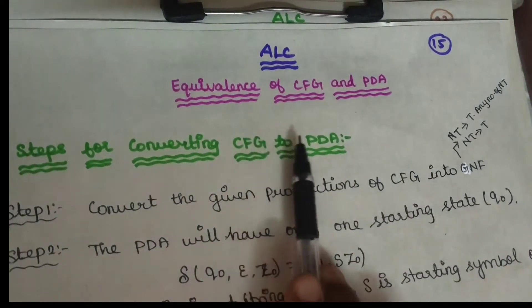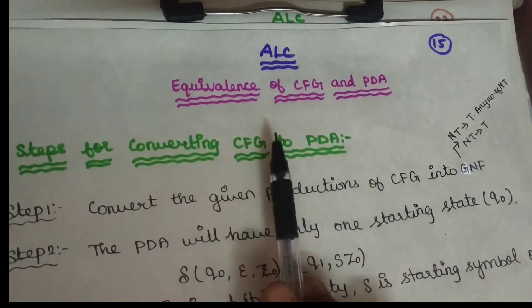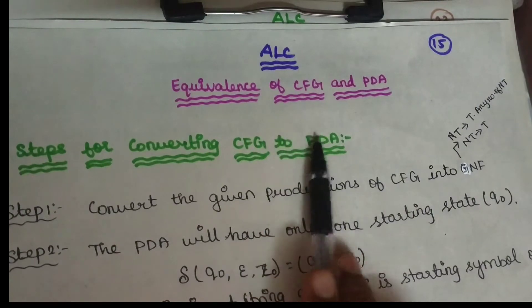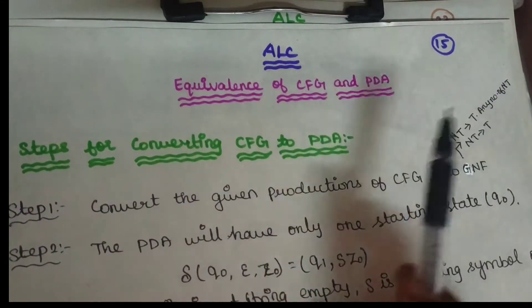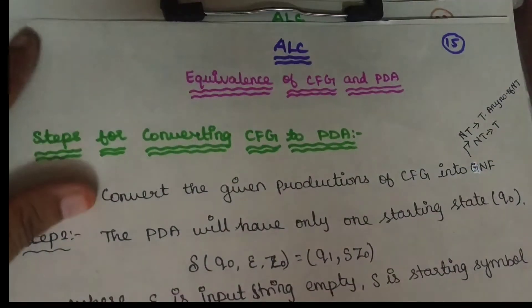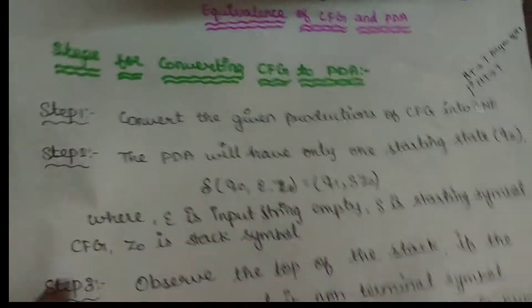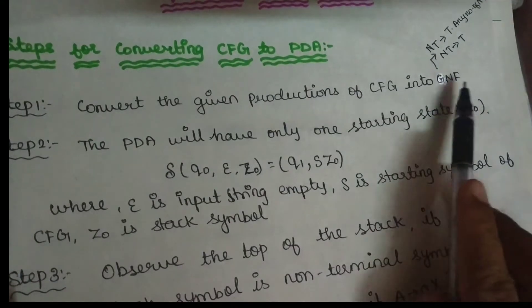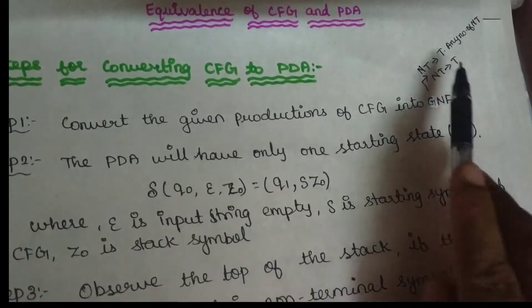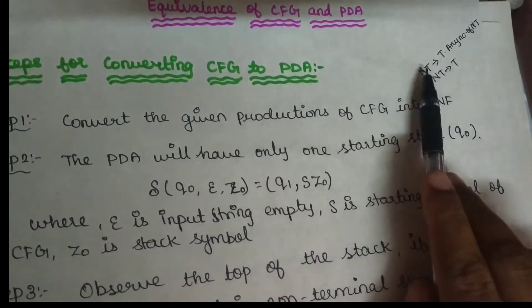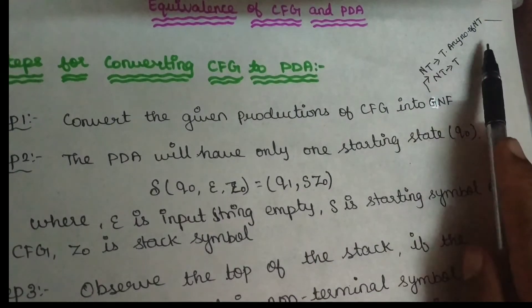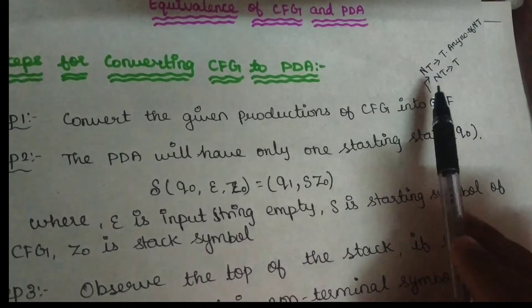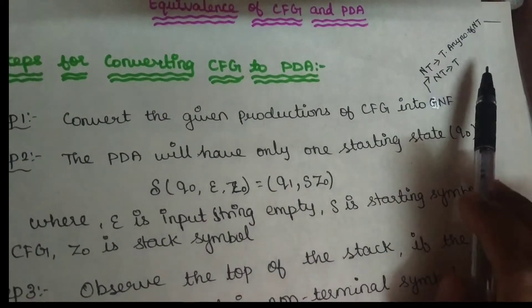Hi friends. What are we going to talk about in this video? Conversions of Context-Free Grammar to Pushdown Automata — how does Pushdown Automata convert? Let's talk about the procedure. We are going to talk about Greibach Normal Form. In Greibach Normal Form, a non-terminal goes to a terminal followed by any number of non-terminals. Non-terminal is a capital letter, terminal is a small letter. This is the format.